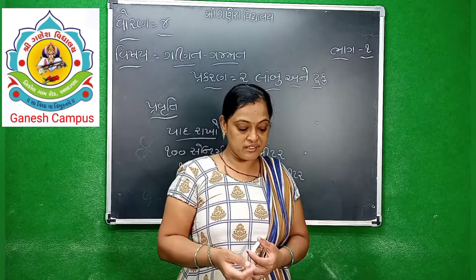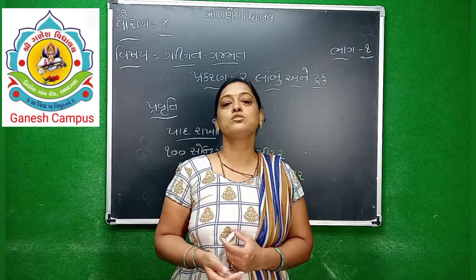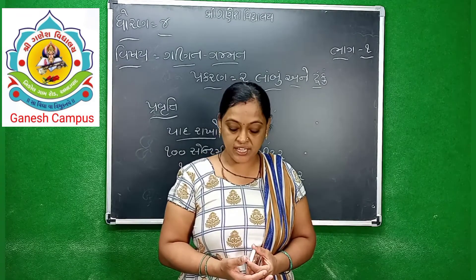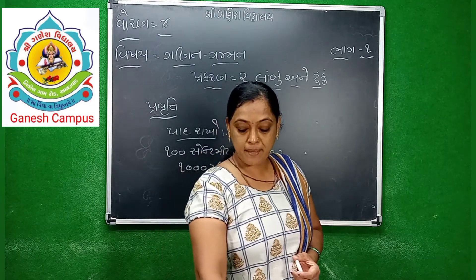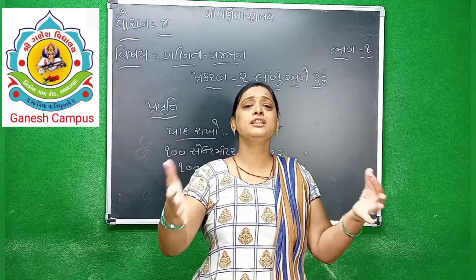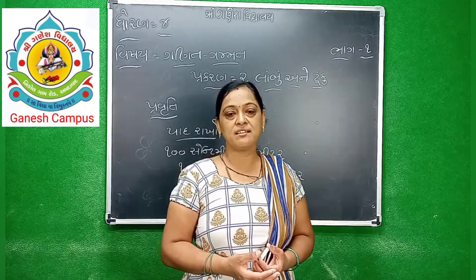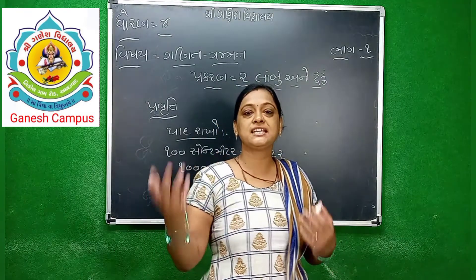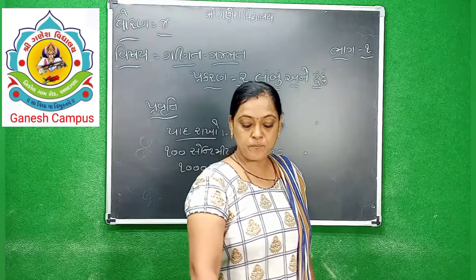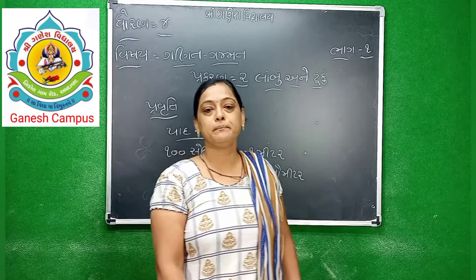તમારું અનુમાન ચૂક્યું છે કે સાચ્ચું - જવાબ આપો. અંદર જુઓ, કયા બે બિંદુ એકબીજાથી વધુ દૂર છે? O અને D બાજુ - તમારો જવાબ ચકાસો. O અને D બાજુ - બંને બિંદુઓ એકબીજાથી ઘણા નજીક મળે છે. હવે પાંચ (5)મું પૃષ્ઠ.